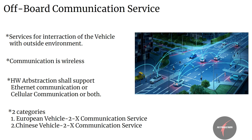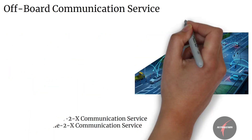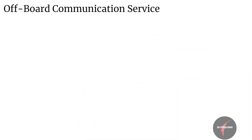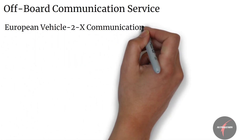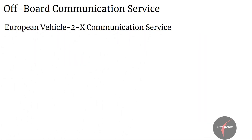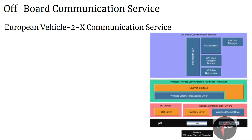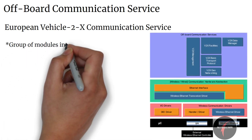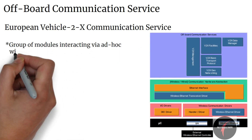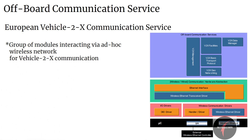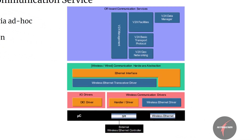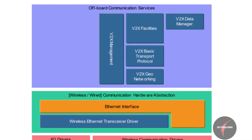Now let's go a bit deeper and see the specific modules present in European Vehicle-to-X communication service. In general, European Vehicle-to-X communication service is a group of modules interacting with an ad-hoc wireless network for vehicle-to-X communication. European Vehicle-to-X communication service consists of the following modules.